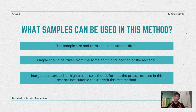The rubber balloon method measures the compressive strength of a soil specimen in material testing. A rubber balloon is filled with the soil specimen, which is then compressed until it breaks. The specimen's highest compressive force is noted and utilized to calculate the compressive strength.